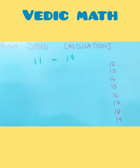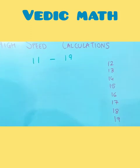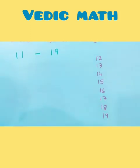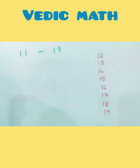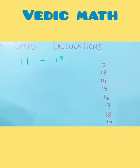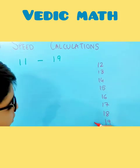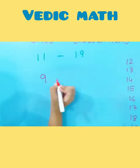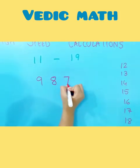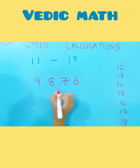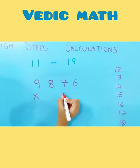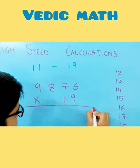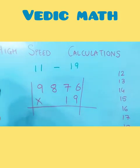Now let's choose another number — number 13, or perhaps 15. My mother always says go for the difficult one, so let's choose 19. Let's consider the number 9876 multiplied by 19. The first step is to make two bars.